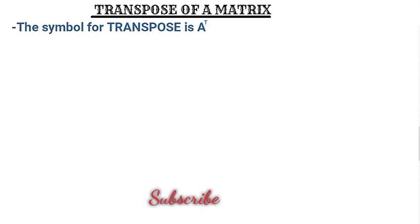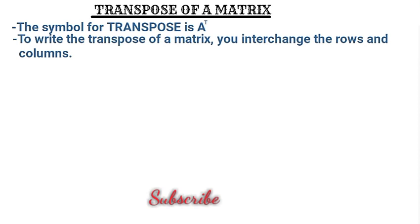So what is a transpose? A transpose is a matrix where you interchange the rows and the columns. To write the transpose of a matrix, you interchange the rows and the columns: what was a row becomes a column, and what was a column becomes a row.